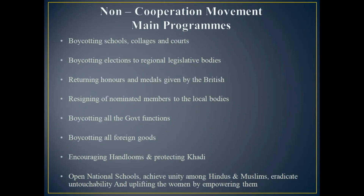Non-Cooperation Movement: The Congress passed a resolution to hold the Non-Cooperation Movement in a special national convention held in Kolkata on September 4, 1920. That session aimed at educating people about the British brutal killings and preventing Jallianwala Bagh-like incidents in future. So the Non-Cooperation Movement started. What were the main programs in it?